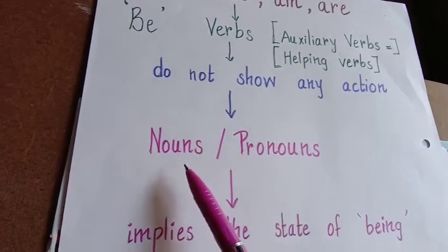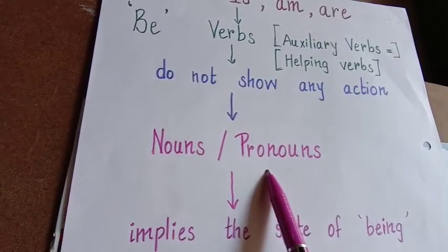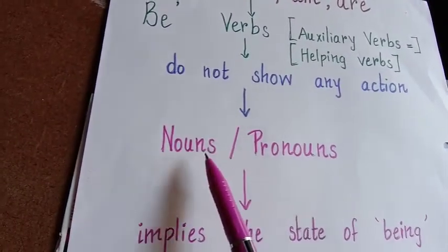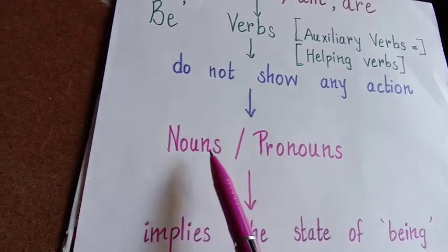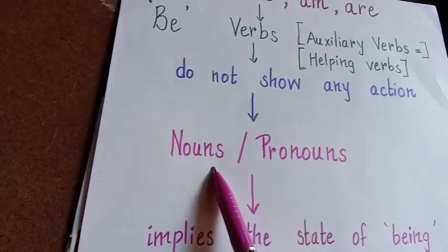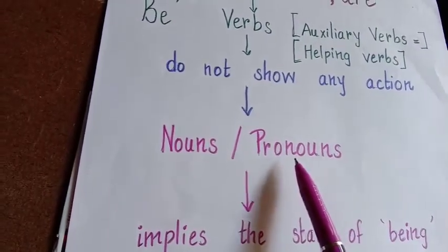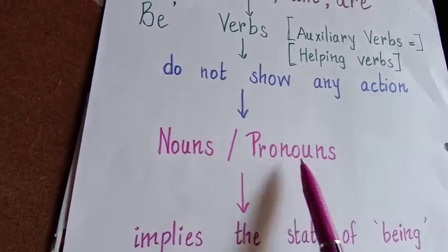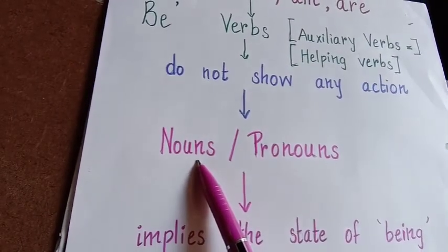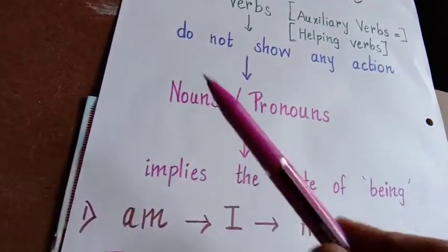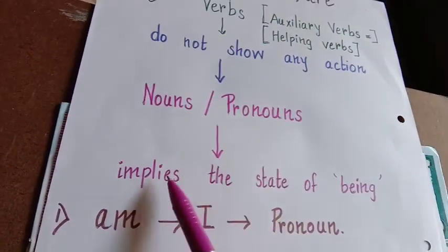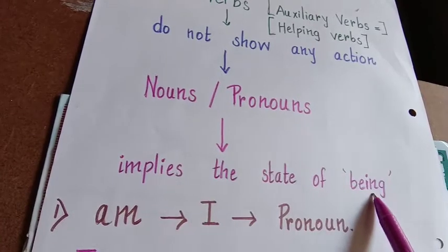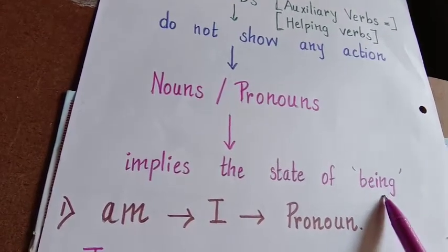Now these B verbs are used along with nouns and pronouns. Pronouns function in the absence of nouns. So these B verbs are used along with nouns and pronouns to imply just the state of being — because that thing is there, it is known as a state of being.